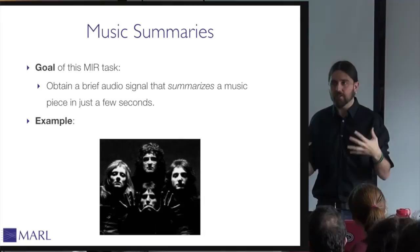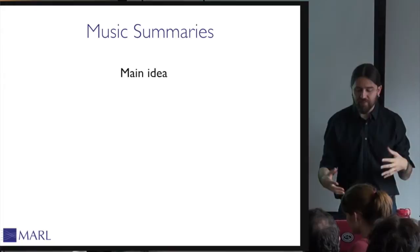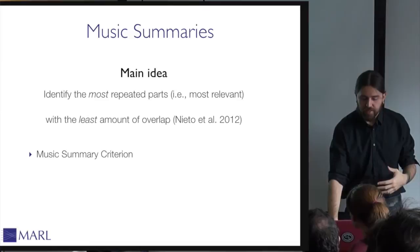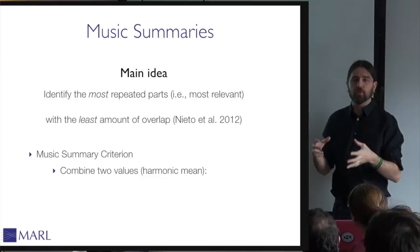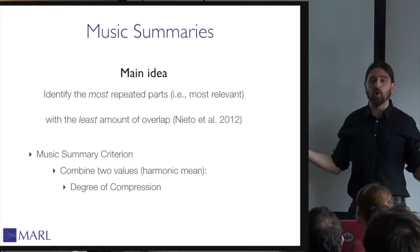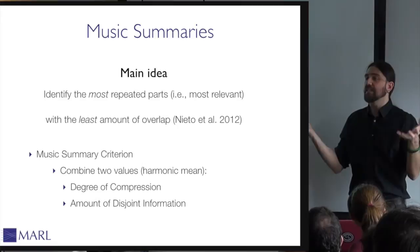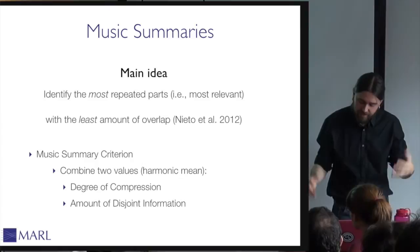The main idea I propose is to identify the most repeated parts — which are hopefully the most relevant — with the least amount of overlap. To do that, I define a music summary criterion that combines two values using a harmonic mean: the degree of compression (how well the selected sub-sequences compress the whole track, indicating high repetitiveness) and the amount of disjoint information between the sub-sequences, which I want to be as high as possible.